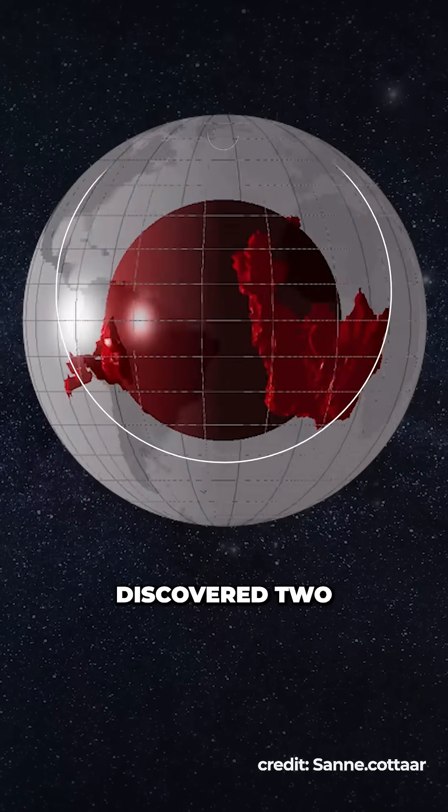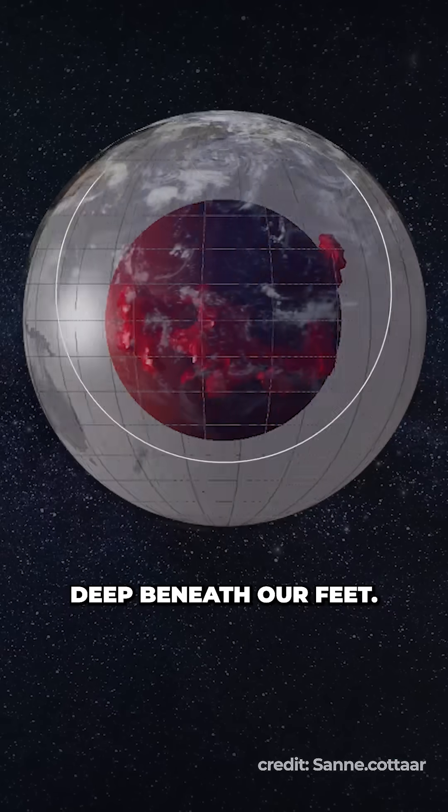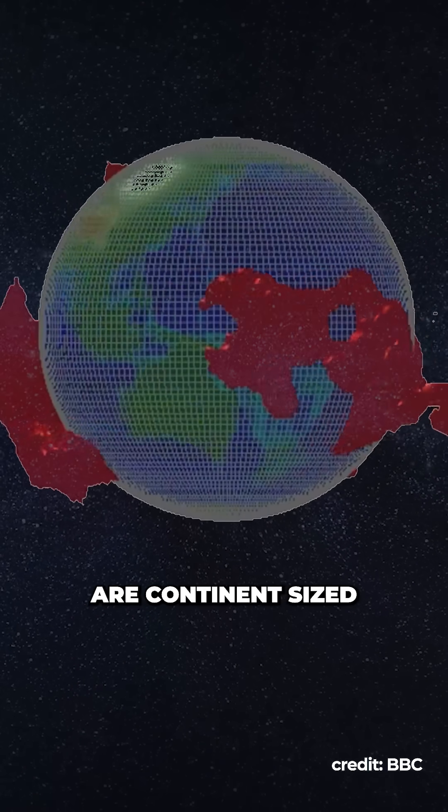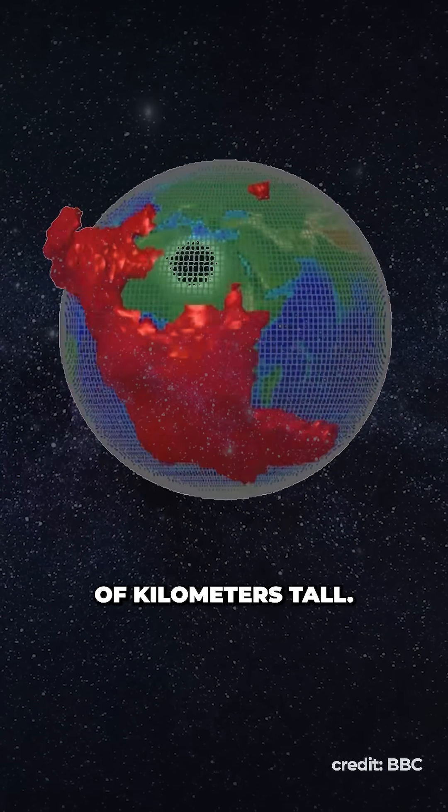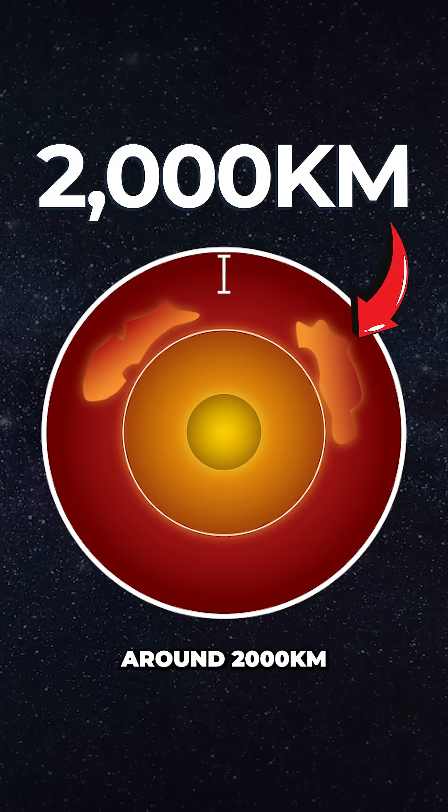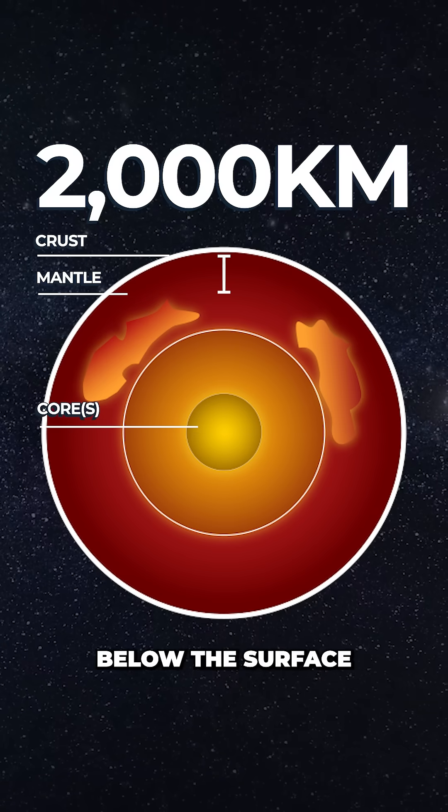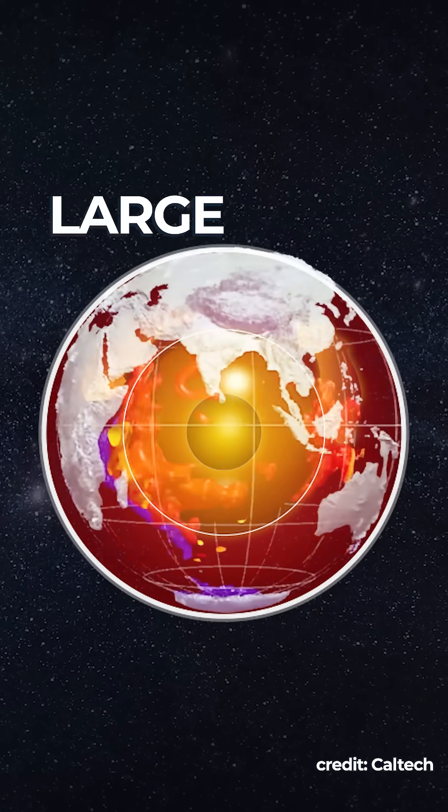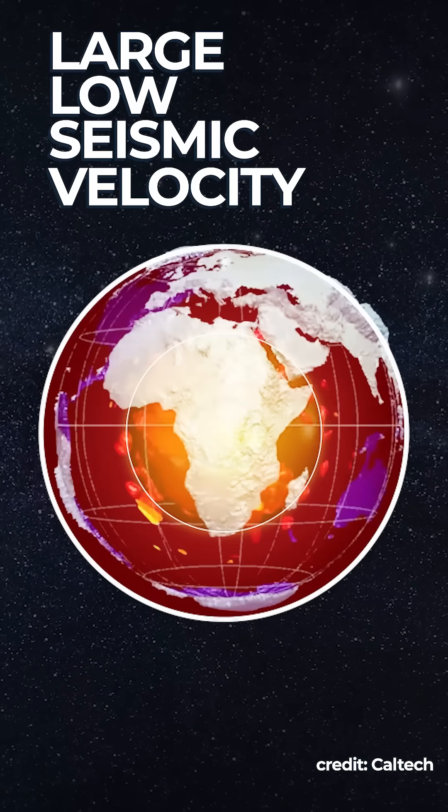In the 1980s, scientists discovered two mysterious structures deep beneath our feet. Both masses are continent-sized and hundreds of kilometers tall. They are located around 2,000 kilometers below the surface of the Earth and are referred to as large, low-seismic-velocity provinces.